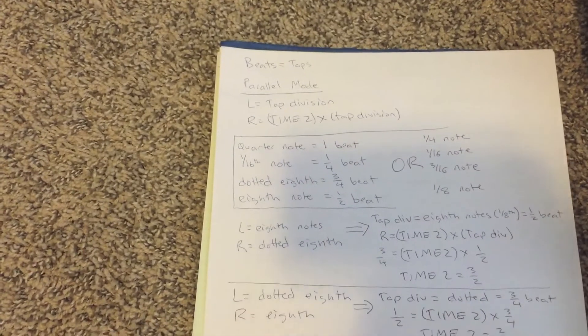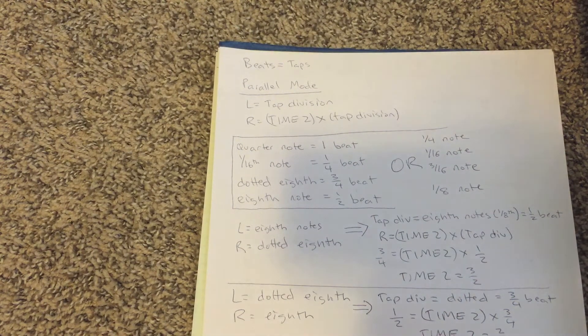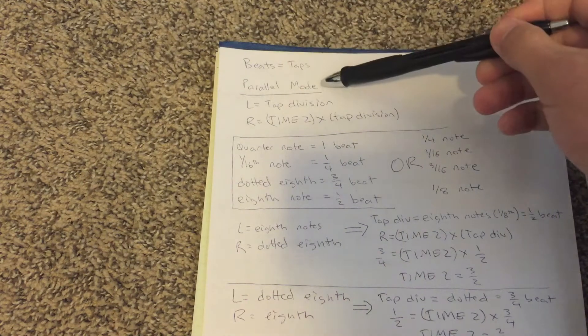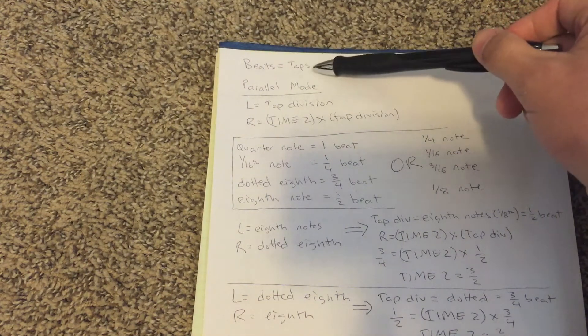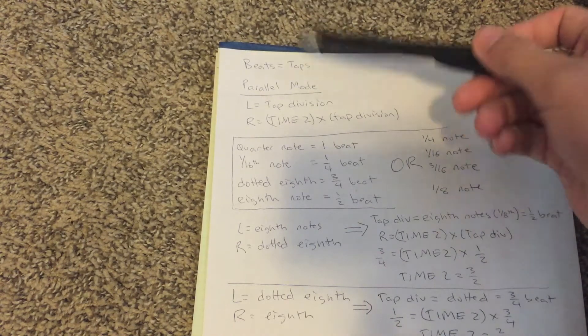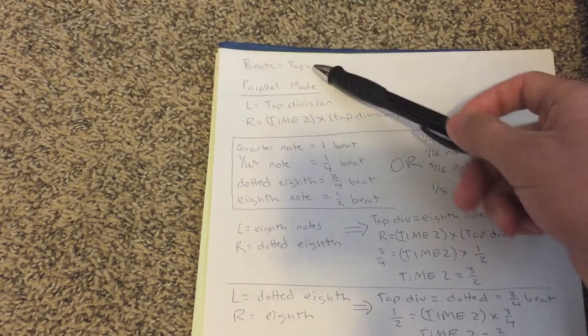So now there's this really simple formula and it lets everything be really simple. So I think of this beats in terms of taps. And so whatever you tap your tempo in on the Timeline or whatever the BPM set to, I have one of those equal to a beat.